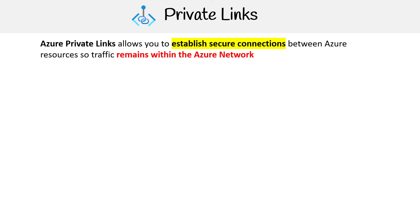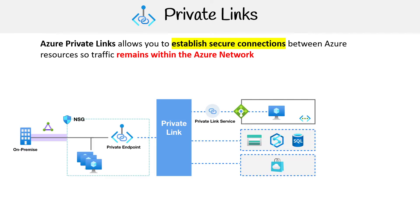Azure Private Link allows you to establish secure connections between Azure resources, so traffic remains within your Azure network. I've got a big graphic here to illustrate this.